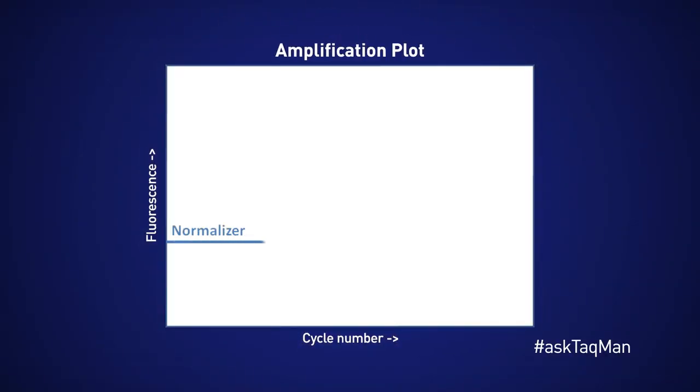Fortunately, there's an adjustment we can make that often solves this problem. Namely, primer limiting the normalizer gene. If we significantly reduce the normalizer assay's primer concentration, it will hit its plateau much earlier. Not because it used up the DNTPs, but rather its own primer.